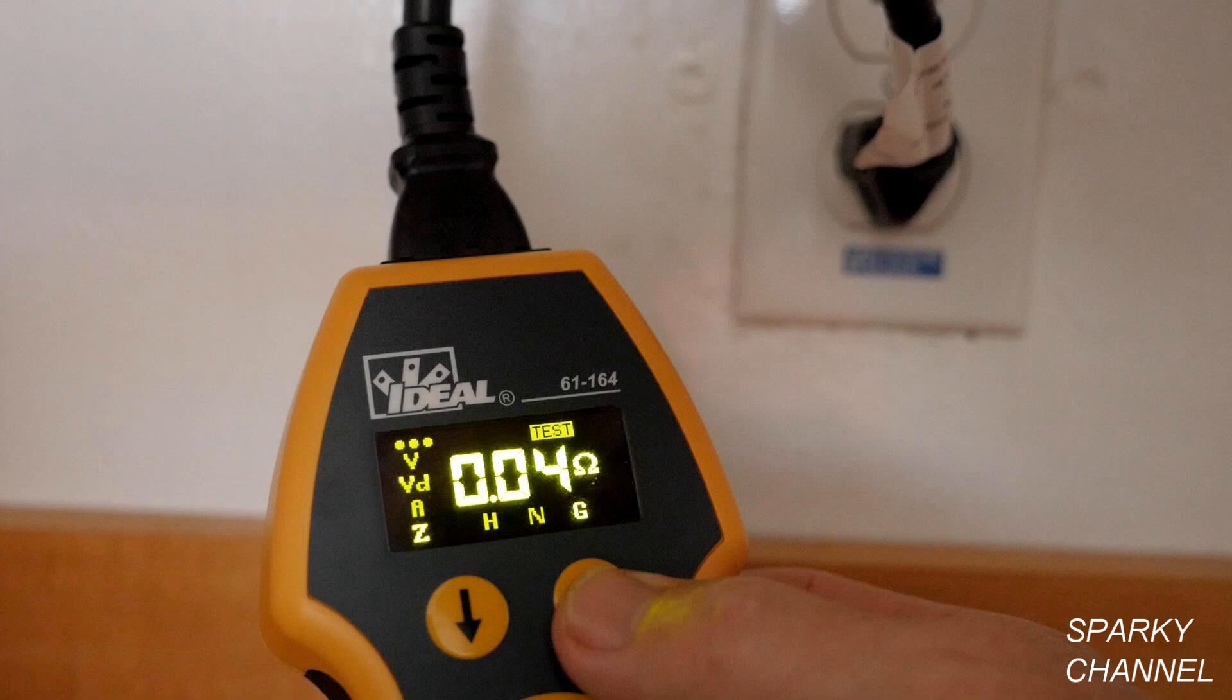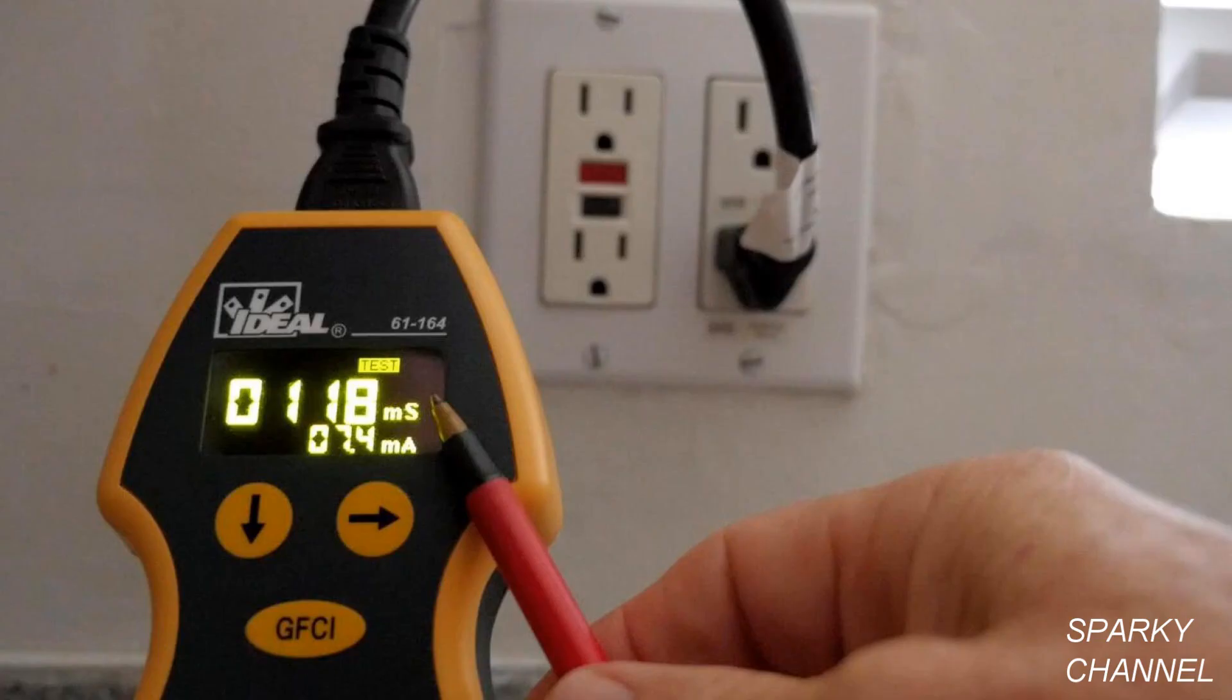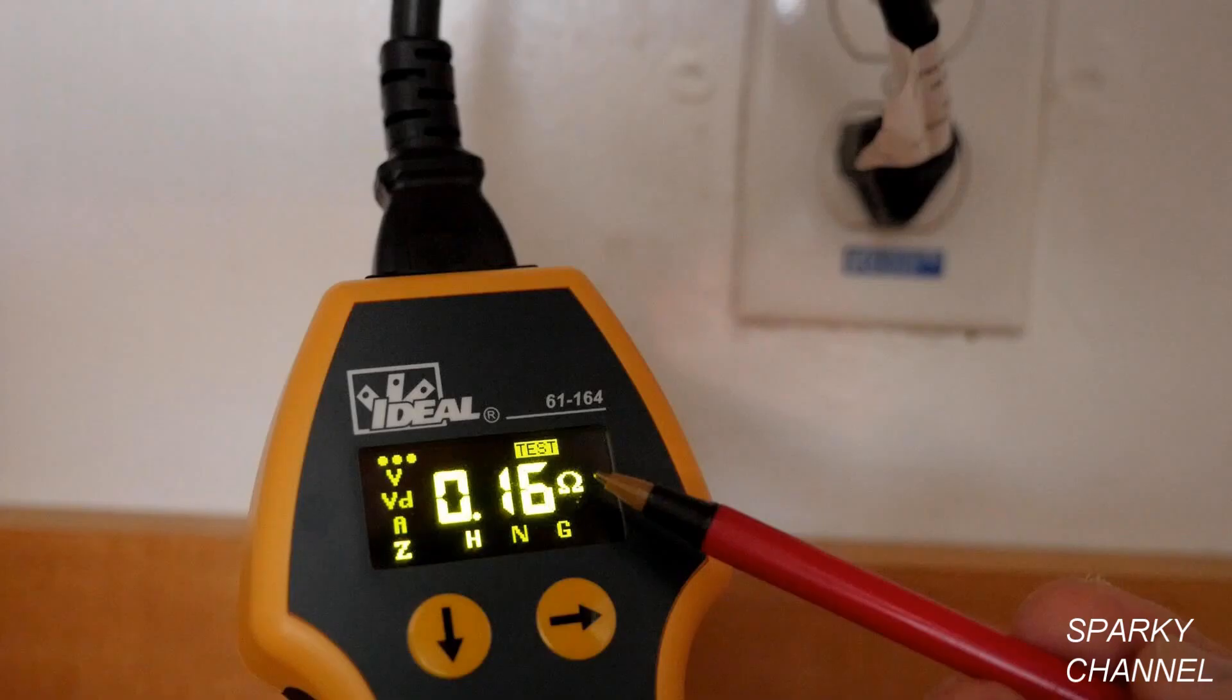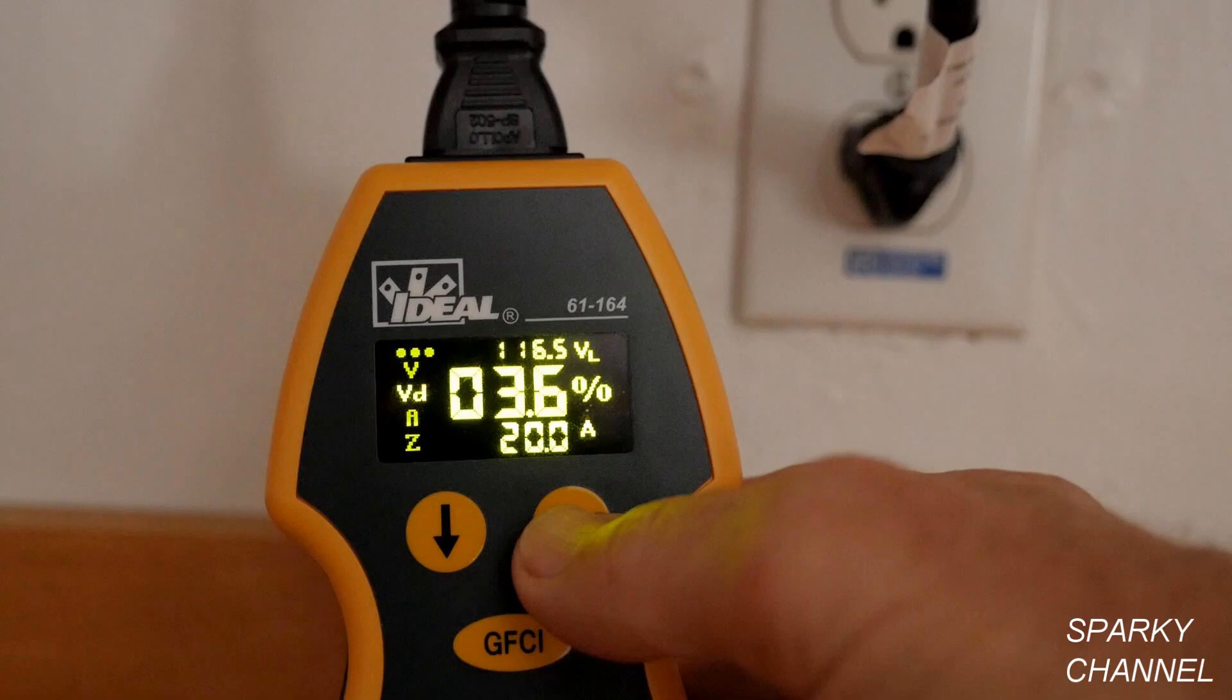The meter can test for bad grounds, false grounds, no ground fault protection, find areas of high resistance in the circuit, and can help increase equipment performance by finding areas on the circuit that have a high voltage drop when under load.